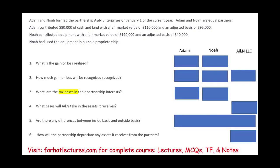Hello and welcome to this session in which we look at a CPA exam simulation to help us understand contributing property to a partnership. Adam and Noah formed the partnership of ANA Enterprises on January 1st of the current year. Adam and Noah are equal partners. Adam contributed $80,000 of cash and land with a fair market value of $110,000 and an adjusted basis of $95,000. Noah contributed equipment with a fair value of $190,000 and an adjusted basis of $40,000, which he used in his business as a sole proprietorship before the partnership was formed.